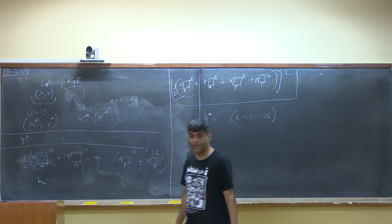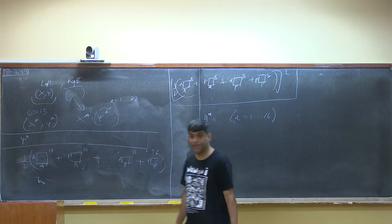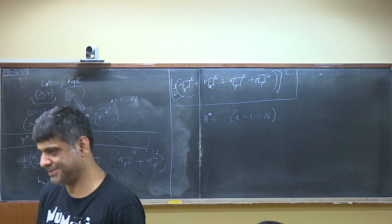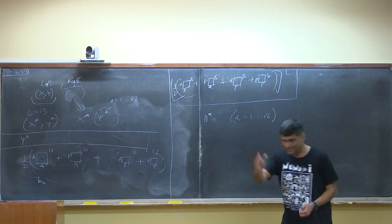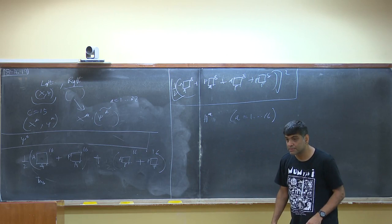By bosonization, for every pair of fermions we get a purely right-moving boson. In this bosonized picture we have bosons h_a, a=1 to 16. We now need to ask what states are allowed in the bosonic language, which comes from our understanding of the GSO projection.